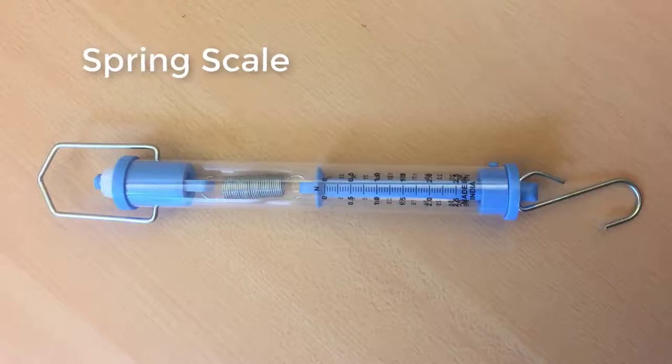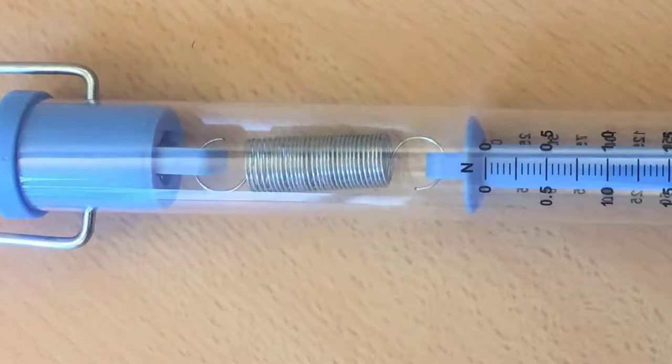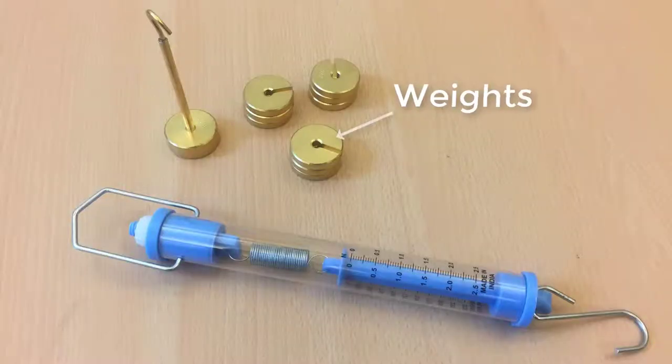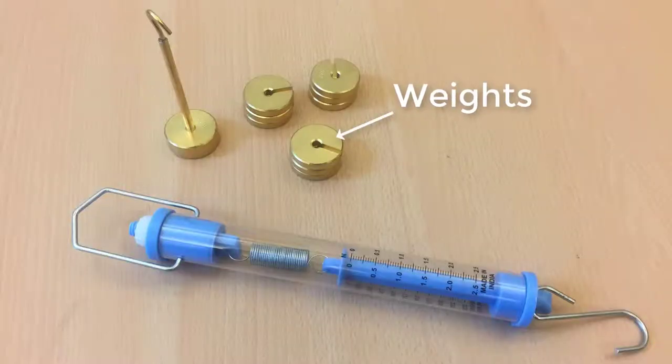Here we have a simple spring scale. You can place weight on the hook at the bottom of the scale, which deforms the spring inside the plastic tube. The tube has markings for force, so the weight of the object corresponds to where a disc at the top of the spring settles in after loading. This particular scale can hold up to 250 grams, or 2.5 newtons. We also have some weights of different sizes for measuring.